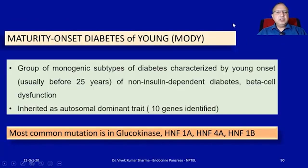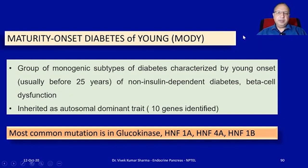There is another group of disorders: maturity-onset diabetes of the young (MODY). It is a group of monogenic subtypes of diabetes characterized by young onset — usually patients less than 25 years of age. Presentation is that of non-insulin-dependent diabetes with beta cell dysfunction. It has genetic mutations usually following autosomal dominant traits, with the most common mutations in glucokinase, HNF1A, HNF4A, and HNF1B.